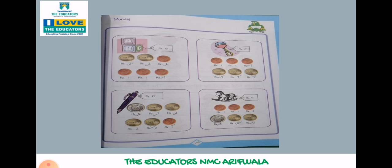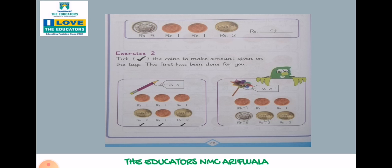12. Then: 5 plus 2 is 7, plus 2 is 9, plus 2 is 11, and plus 1 is 12. Next: 5, 9, 5 plus 2 is 7, plus 2 is 9.